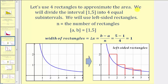Let's use four rectangles to approximate the area, and we'll divide the closed interval from one to five into four equal subintervals, using left-sided rectangles first. So n is equal to the number of rectangles, so in this case n equals four, and because our interval is from one to five, a equals one and b equals five. We'll first determine the width of each subinterval, or the width of each rectangle, which is equal to delta x, which would be b minus a divided by n, which in this case equals one. Because we're using left-sided rectangles, the height of the rectangles will be equal to the function value on the left of each subinterval.